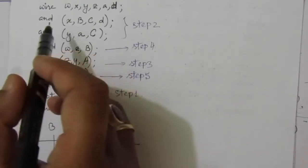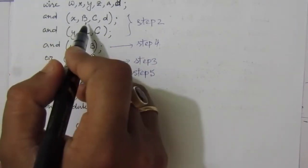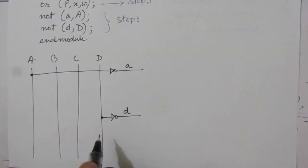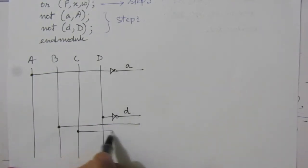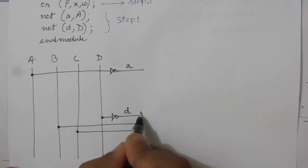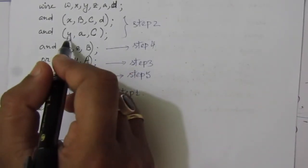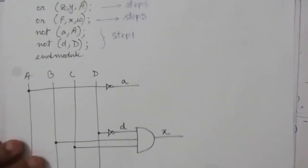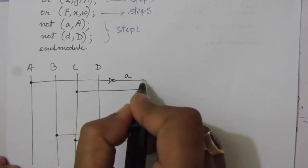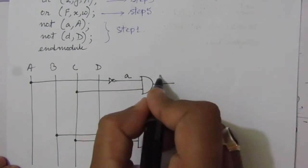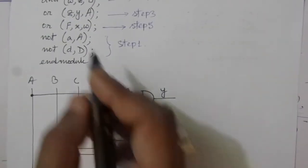In the second step we find x and y using AND operations. For x, we do the AND operation between capital B, capital C, and small d. Draw a line from B and another from C; small d is already there, so we place an AND gate and get small x. For y, we do the AND operation between small a and capital C. Place another AND gate and here we get y.